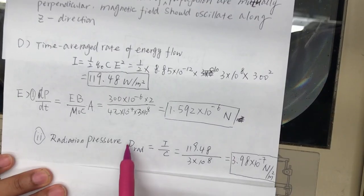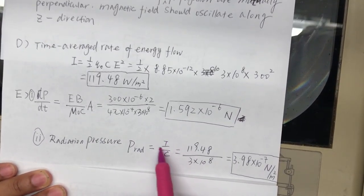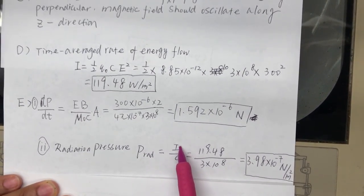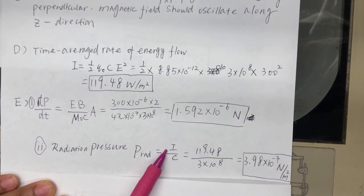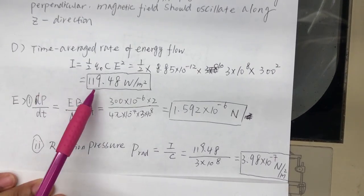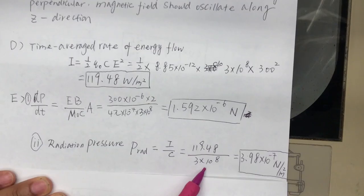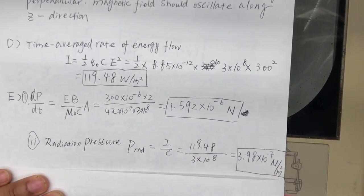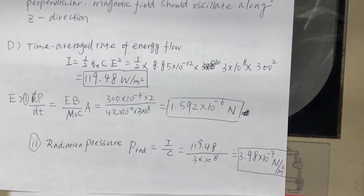Another equation. The radiation pressure on the surface equals the average, the time average rate of energy flow divided by the speed of light. We calculated the time averaged rate of energy flow from part D. We plug 119.48 on the top, speed of light on the bottom, and we end up with 3.98 times 10 to the minus 7th newtons per meter. Classic case of plug and chug, and this is question four. I'll see you next time.